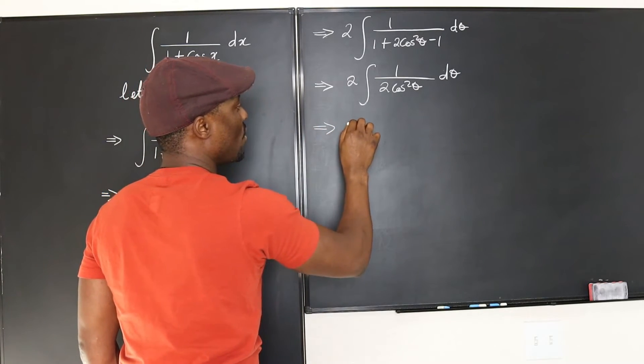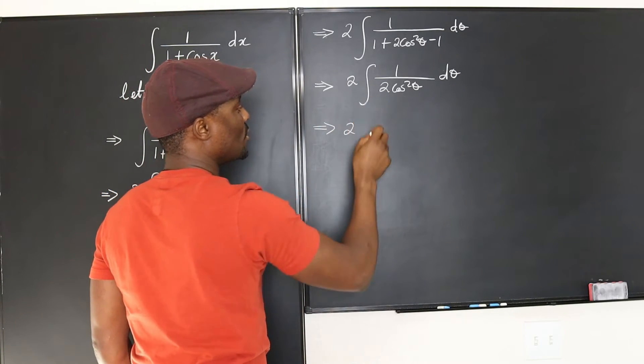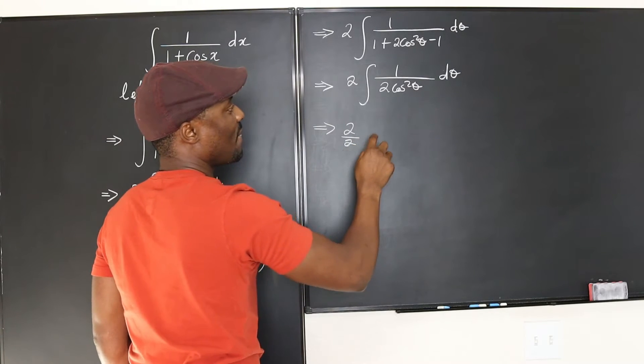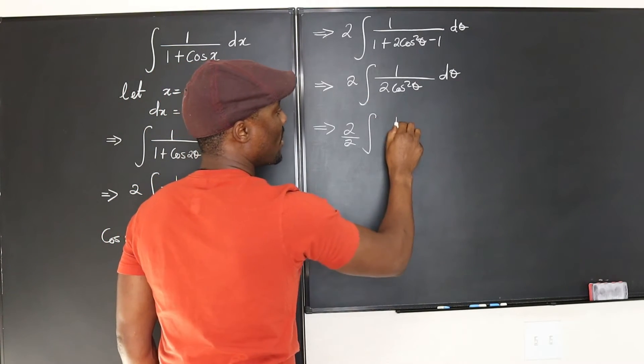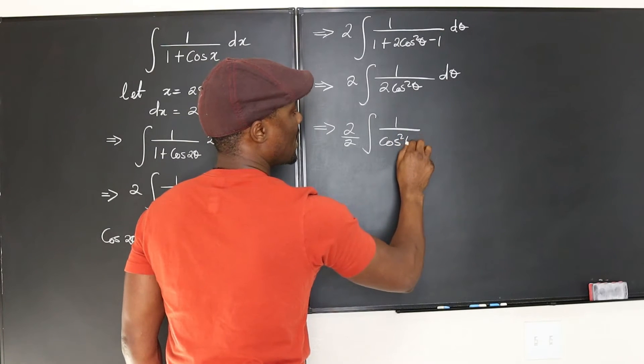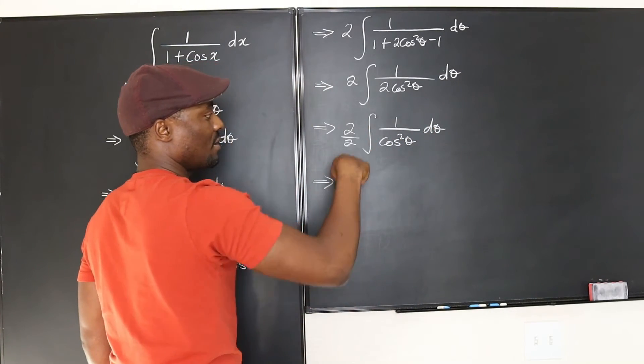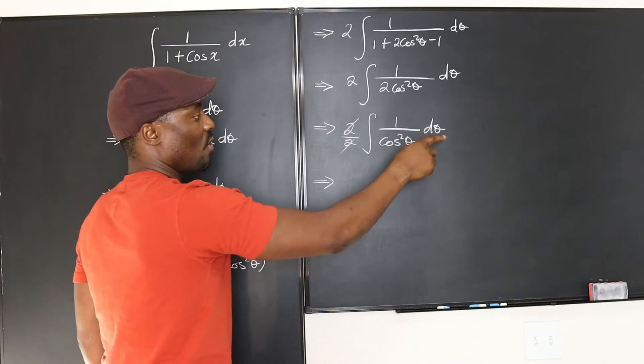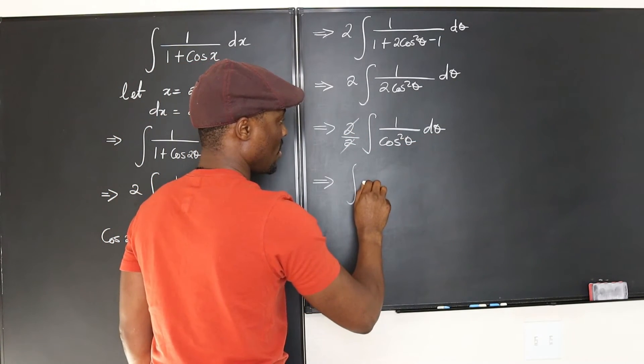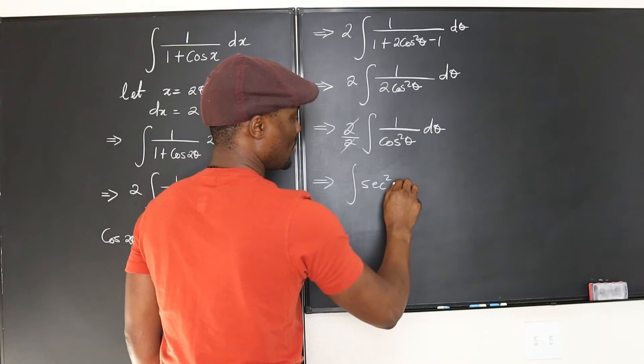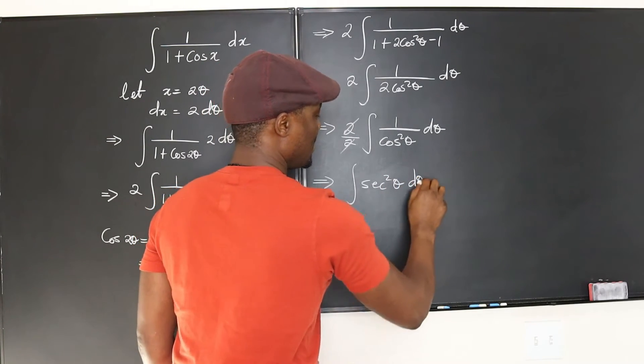And that would be equal to 2. This 2 goes out here. That's 2 over 2. Okay? Integral of 1 over cosine squared theta d theta. Well, this is 1. They both cancel out. And what's left is integral of 1. And what's left is integral of secant squared theta d theta.